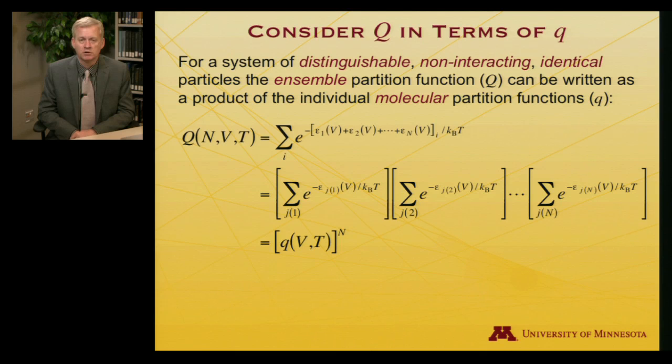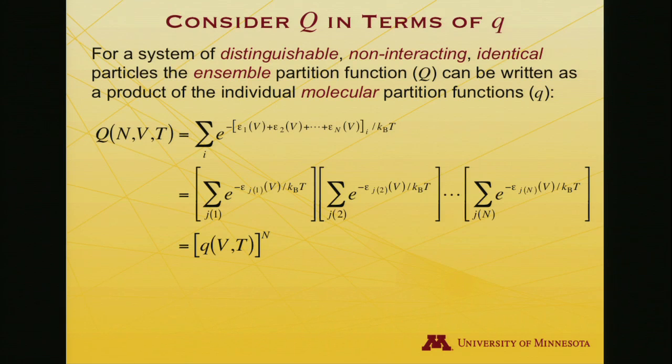So let's look more carefully at this issue of the ensemble partition function, in terms of a molecular partition function, little q. So given a system of distinguishable, that is I can apply labels to them and tell them apart, non-interacting, and so that's like an ideal gas, doesn't interact, the individual molecules have no interaction with each other. Identical, so every molecule is the same molecule. Given that system of distinguishable, non-interacting, identical particles, the ensemble partition function can be written as a product of the individual molecular partition functions. Let's look at why mathematically.